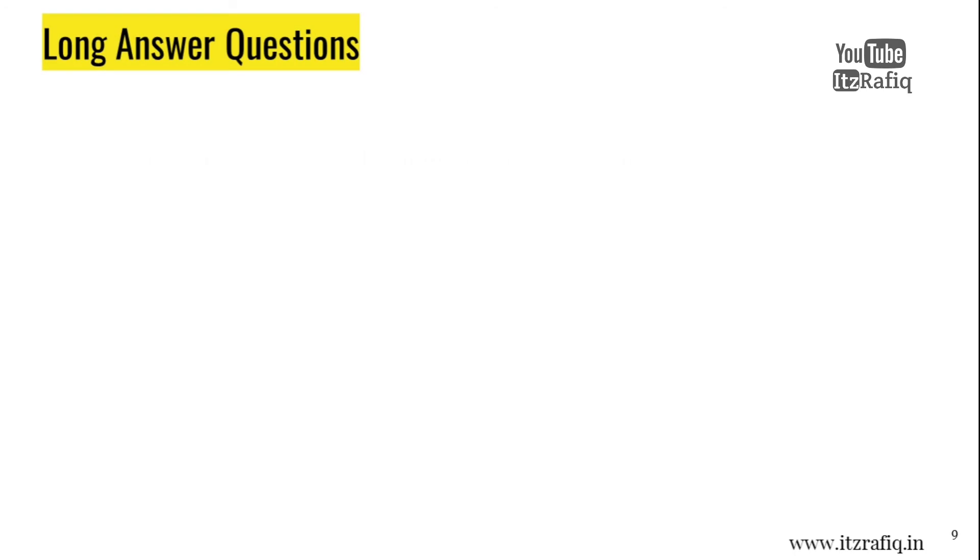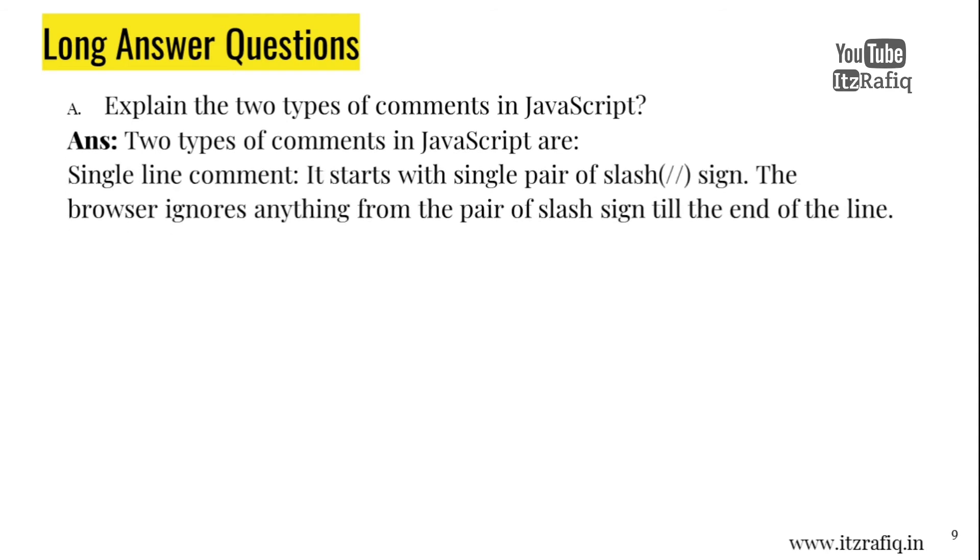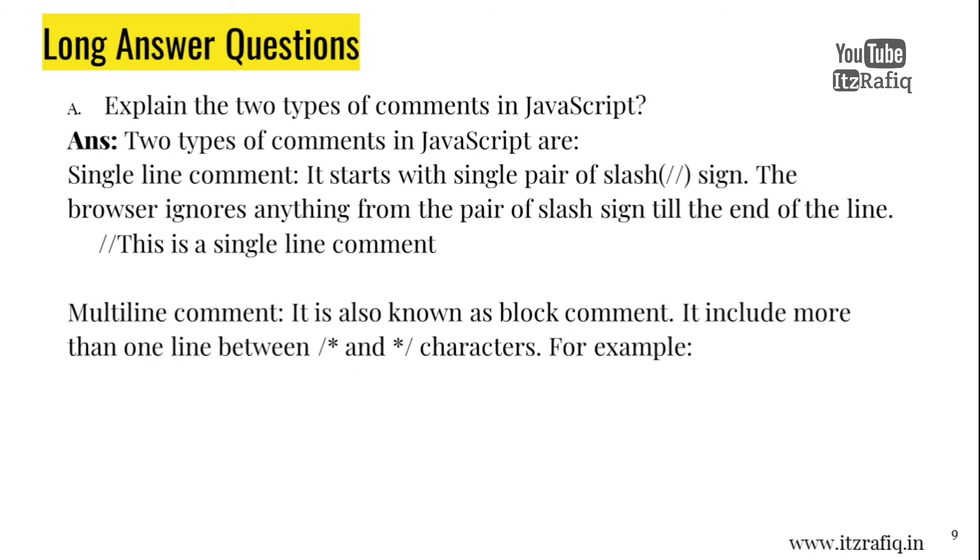Long answer questions. A. Explain the two types of comments in JavaScript. Two types of comments in JavaScript are single line comment. It start with single pair of slash sign. The browser ignores anything from the pair of slash sign till the end of the line. Two slash sign this is a single line comment.